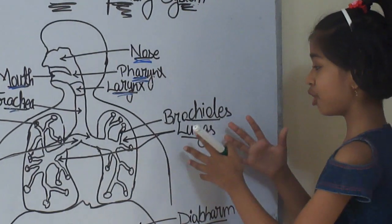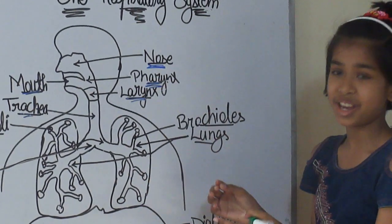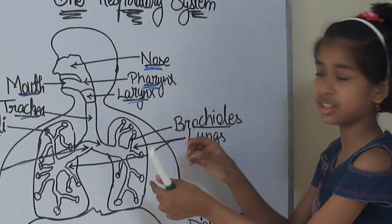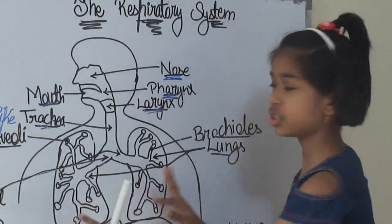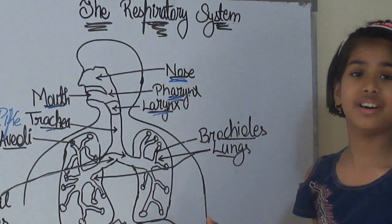And here we have bronchioles. The bronchioles, it is basically a tube in the lungs. Then, these tube-like structures go into the lungs.